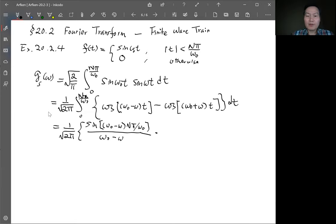And then minus sine of omega zero plus omega times n pi over omega zero divided by omega zero minus omega. So this is plus. All right.